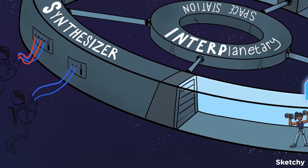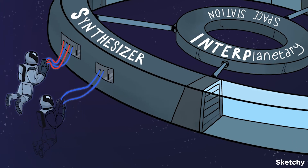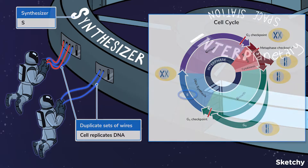Onto the synthesizer room — this is where new information gets synthesized. Let these duplicate sets of wires remind you that a cell doubles its chromosomes during the S phase.